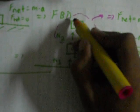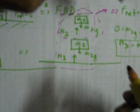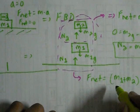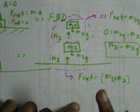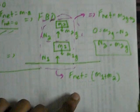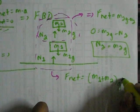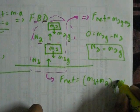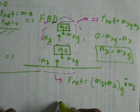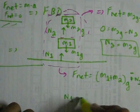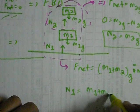Now, for getting N1, I have to take in consideration both of these blocks. Here, while calculating the net force, we have to take the total mass, that is, M1 plus M2 as a whole, G, minus N1. F net is zero, so N1 is equal to M1 plus M2G.